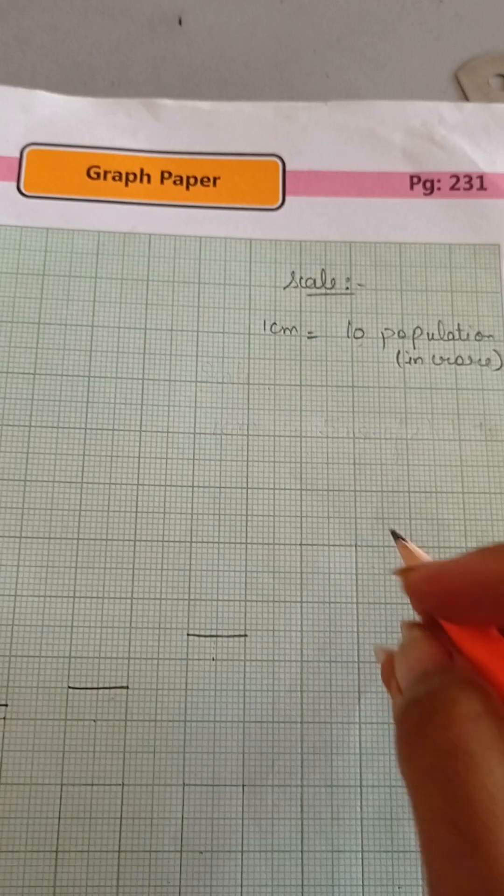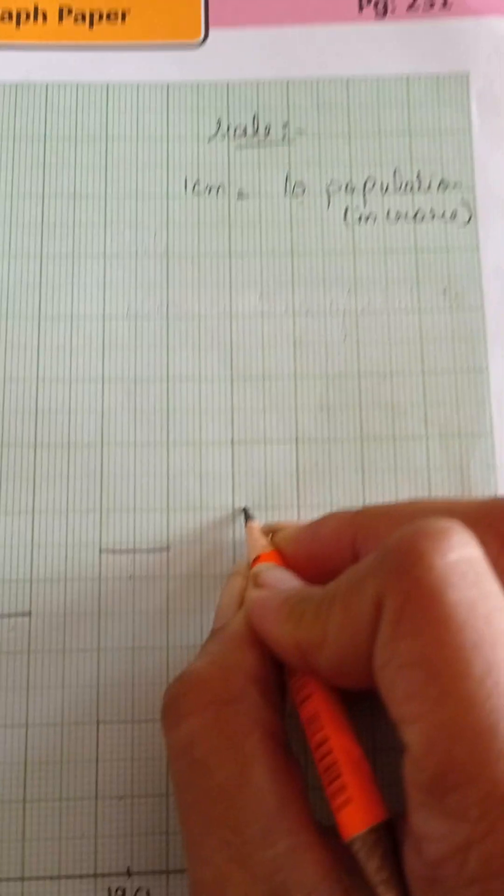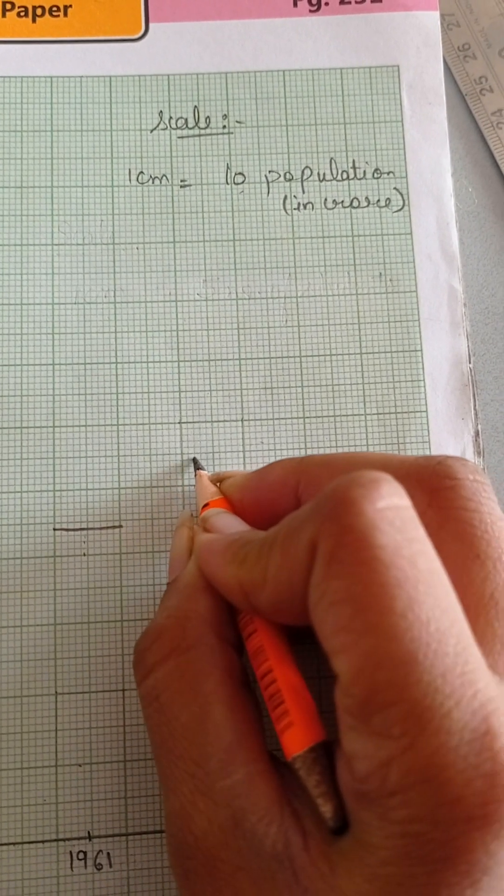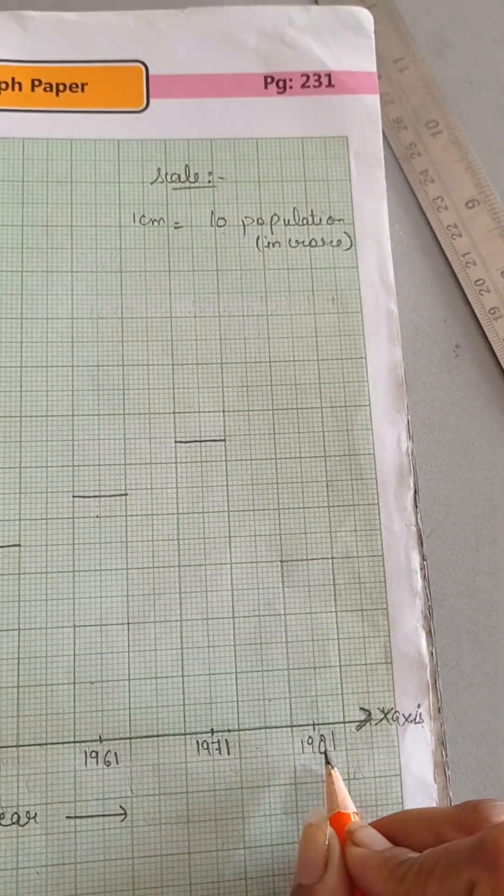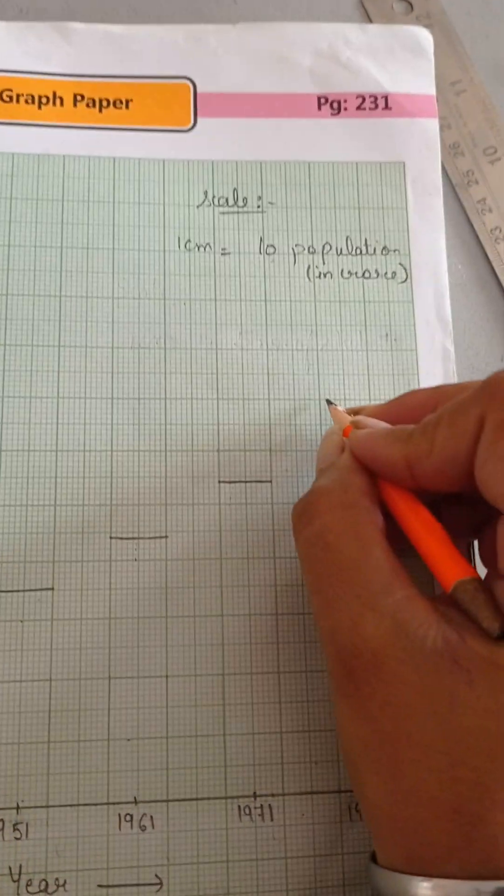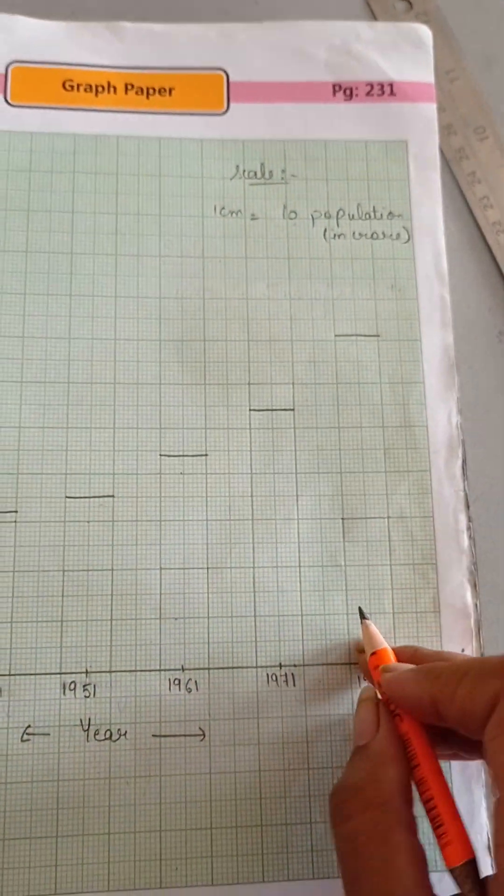In 1971, it is 54 crores. Here it is 50, 51, 52, 53 and 54. Now, last one in 1981, it is 71 crores. It is 70, next one is 71. Now, join the lines and make the bar graph.